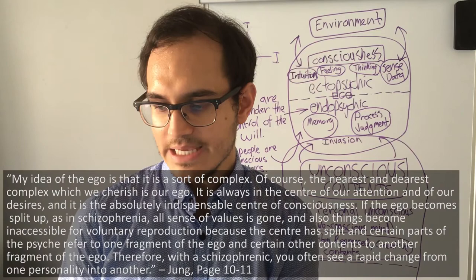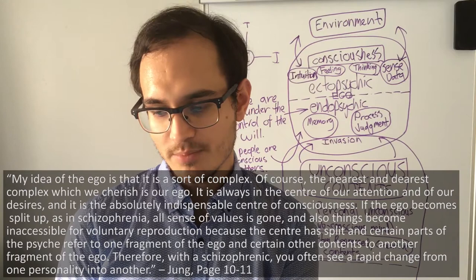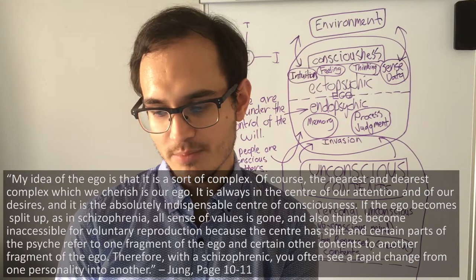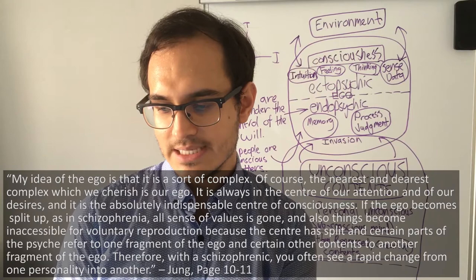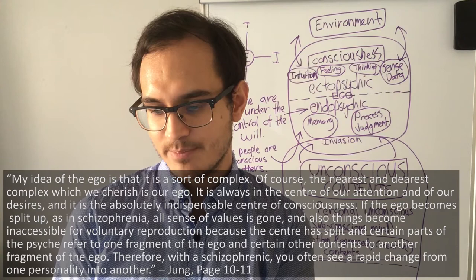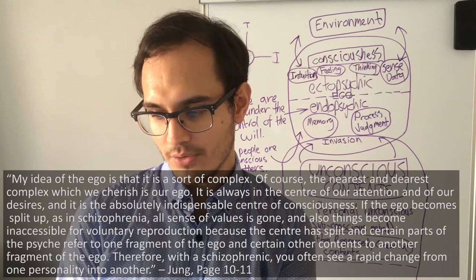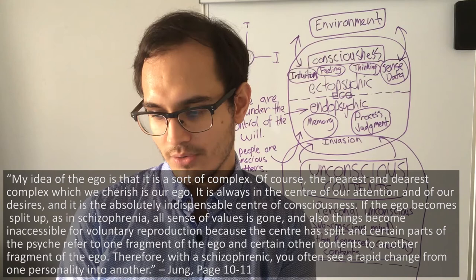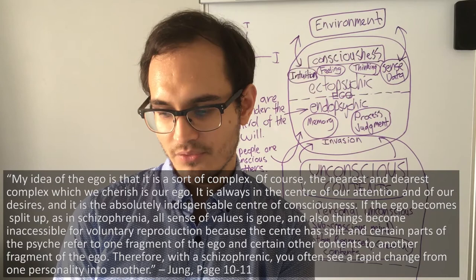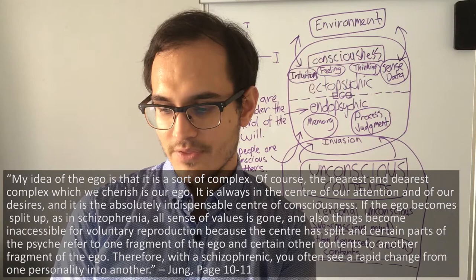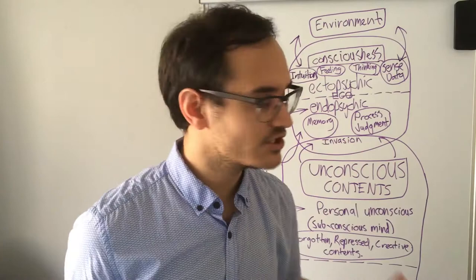Here is Jung's quote on the ego: 'My idea of the ego is that it is a sort of complex — the nearest and dearest complex which we cherish is our ego. It is always in the center of our attention and of our desires and it is the absolutely indispensable center of consciousness. If the ego becomes split up as in schizophrenia, all sense of values is gone, and things become inaccessible for voluntary reproduction, because the center has split — and certain parts of the psyche refer to one fragment of the ego and certain other contents to another fragment.'